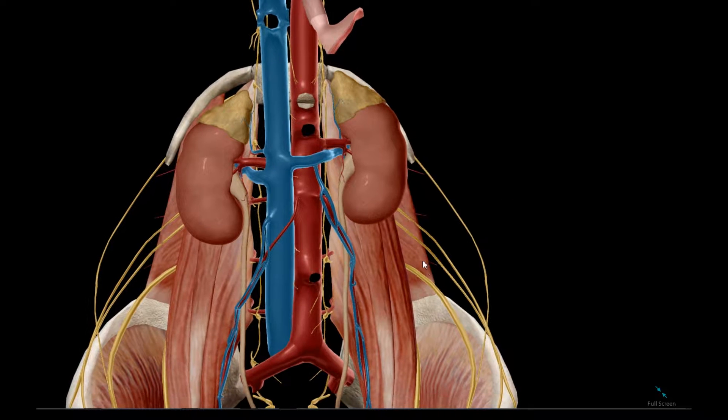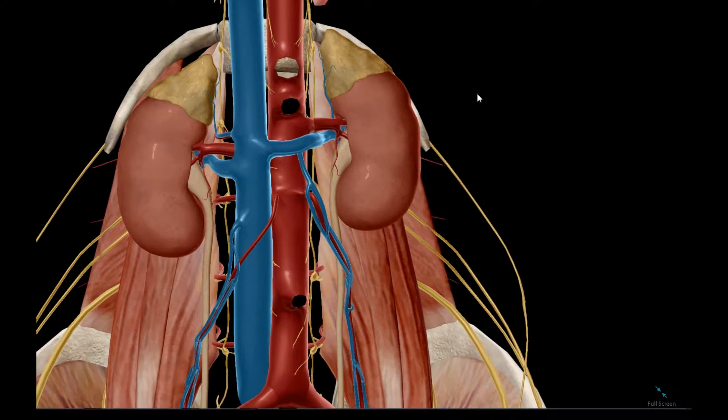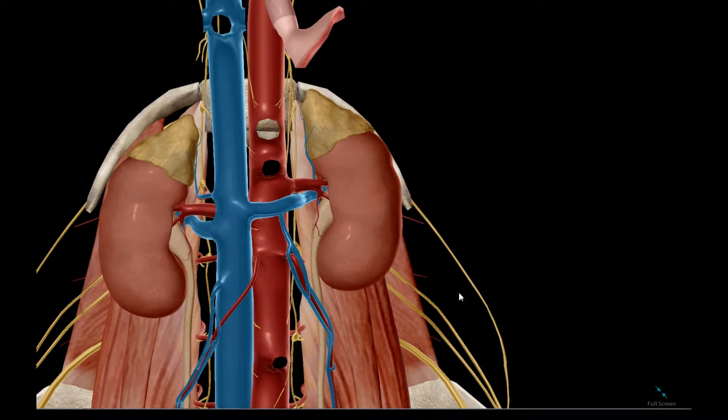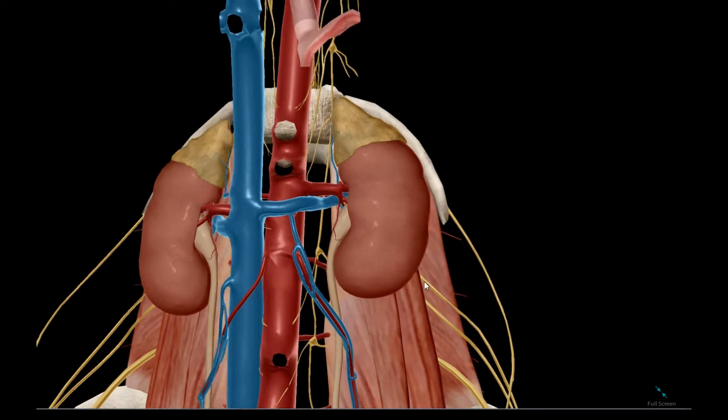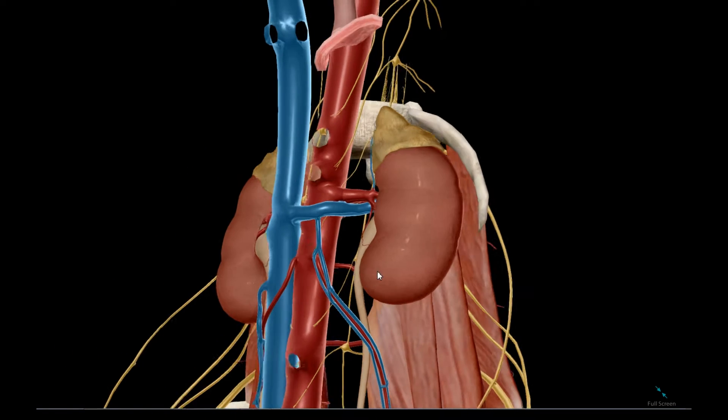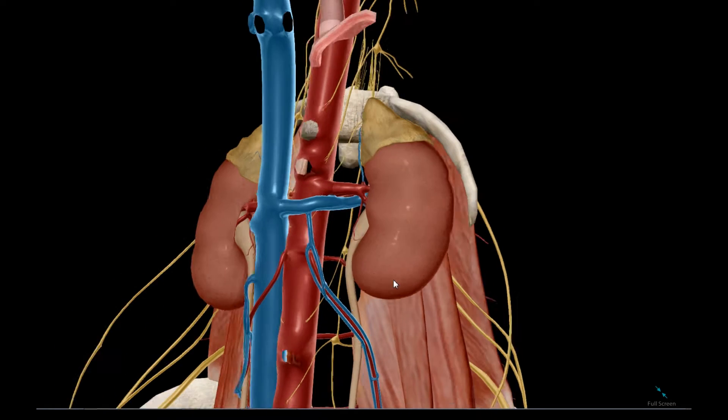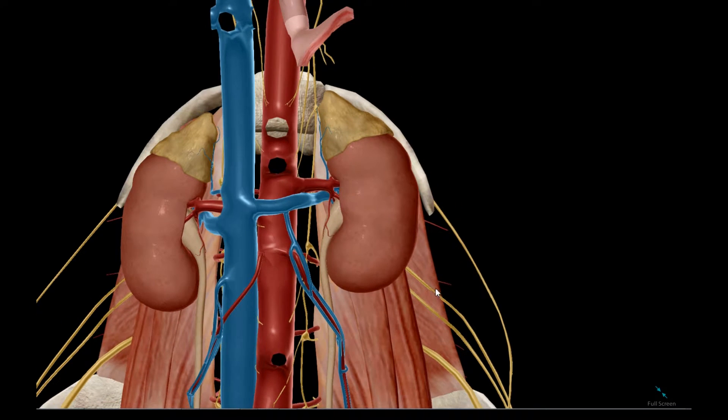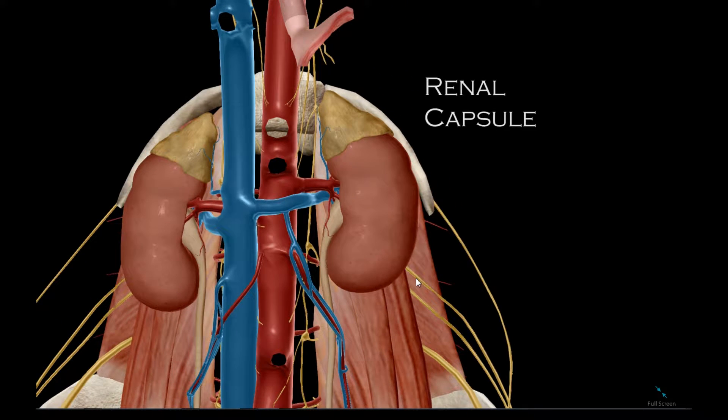Looking closer at the kidneys, we see the shiny outer surface called the capsule.